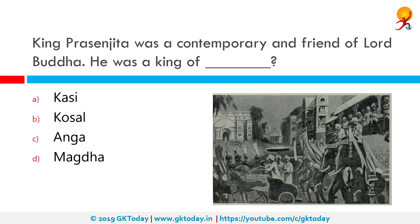King Prasenjit was a contemporary and friend of Lord Buddha. He was the king of Kosala, with Shravasti as his capital. He succeeded his father Sanjay Mahakosala and was a prominent follower of Gautama Buddha who built many Buddhist monasteries.